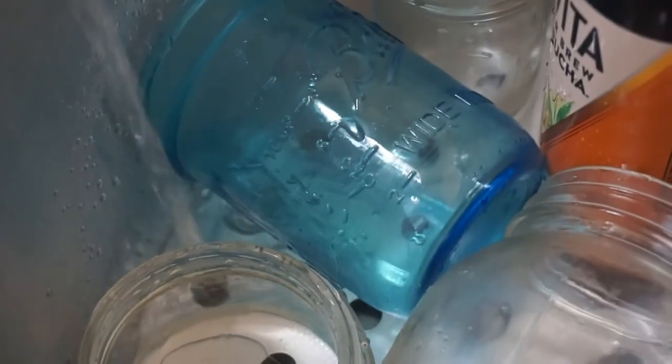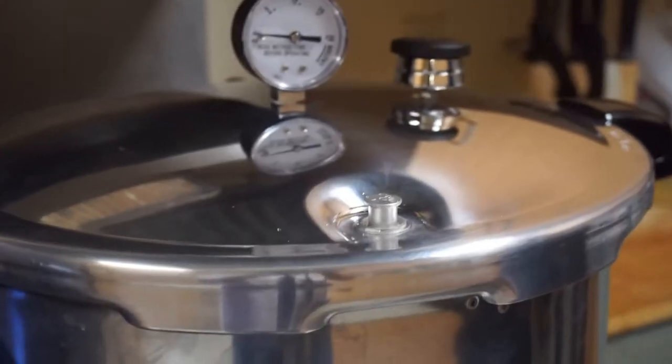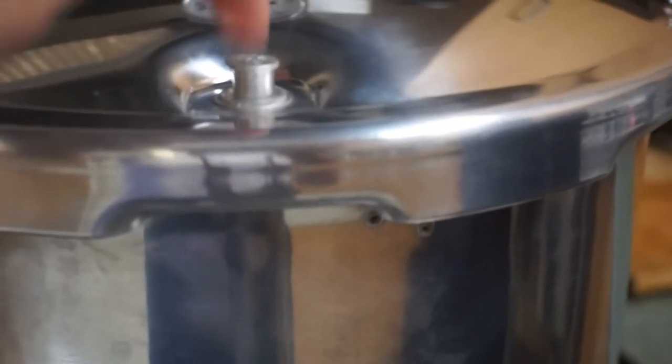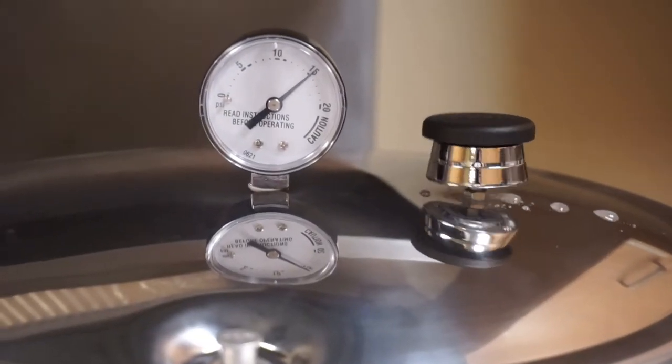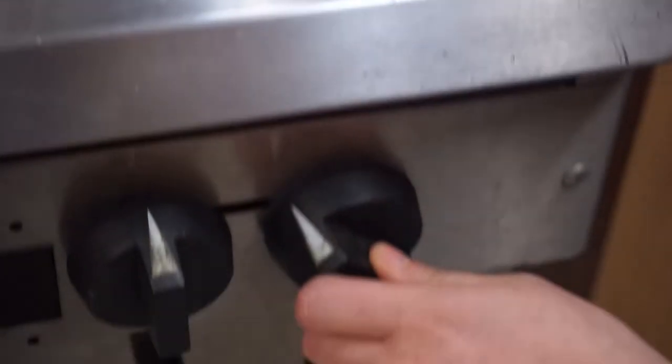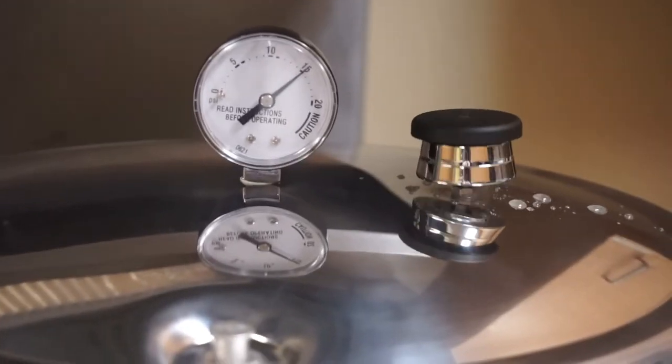Next, fill the pressure cooker with enough water to where you can see it at the canner rack. Now you can pressure cook for 45 minutes at 15 psi. Once pressure has reached 15 psi, adjust heat to maintain this pressure. Do not let it rise above 15 psi.